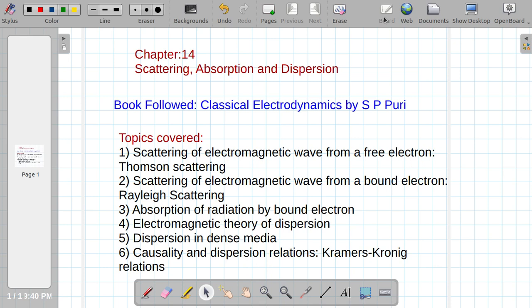Under this chapter I will cover the following topics: scattering of electromagnetic waves from a free electron, known as Thomson scattering; scattering of electromagnetic waves from a bound electron, relating to Rayleigh scattering; and absorption of radiation by bound electrons.